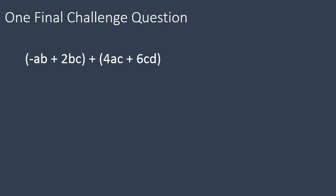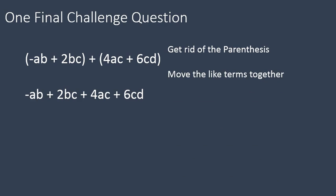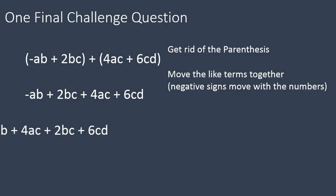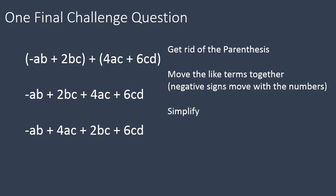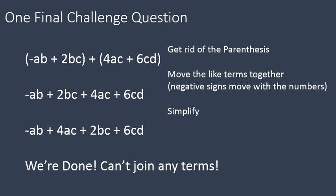One final challenge question: negative ab plus 2bc plus 4ac plus 6cd. Go ahead and pause the recording and try this one on your own. We're going to get rid of the parentheses, move together the like terms — making sure negatives move with their terms — and then simplify. Actually, we're done with this one. None of these terms are like. This is kind of a funny one where all of the terms are completely different. They have some parts that are the same but they are totally different variables, so you can't join any of them together. This was a trick question!